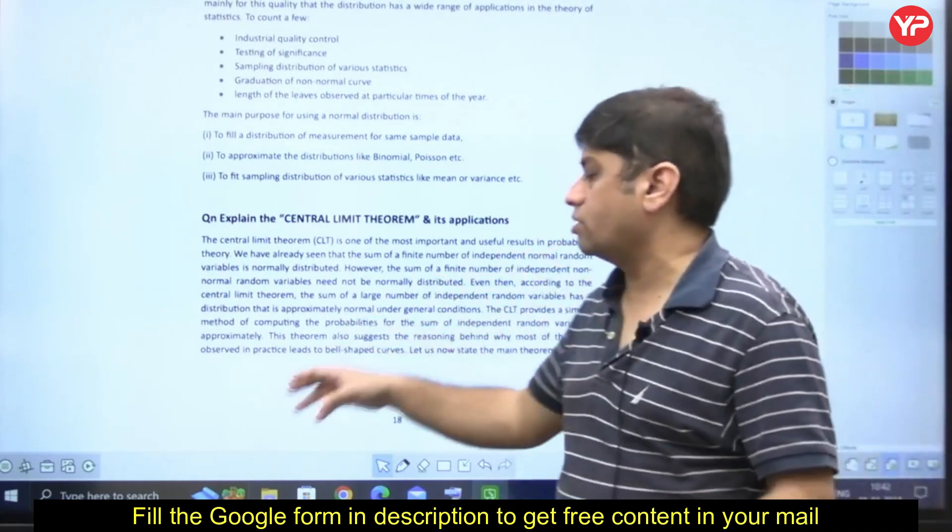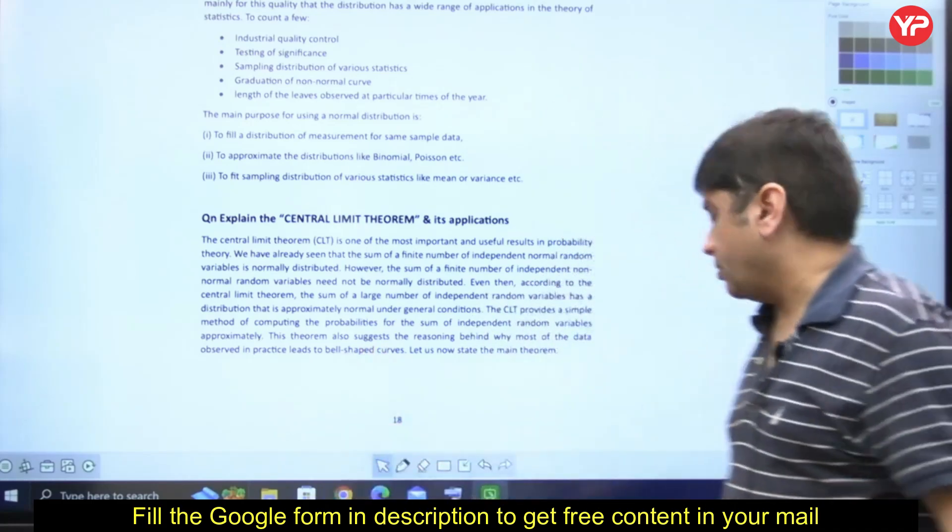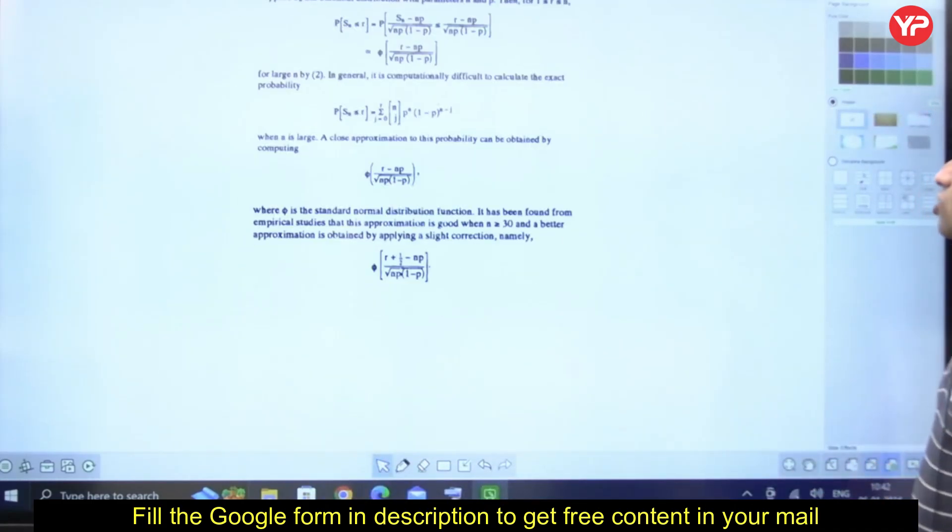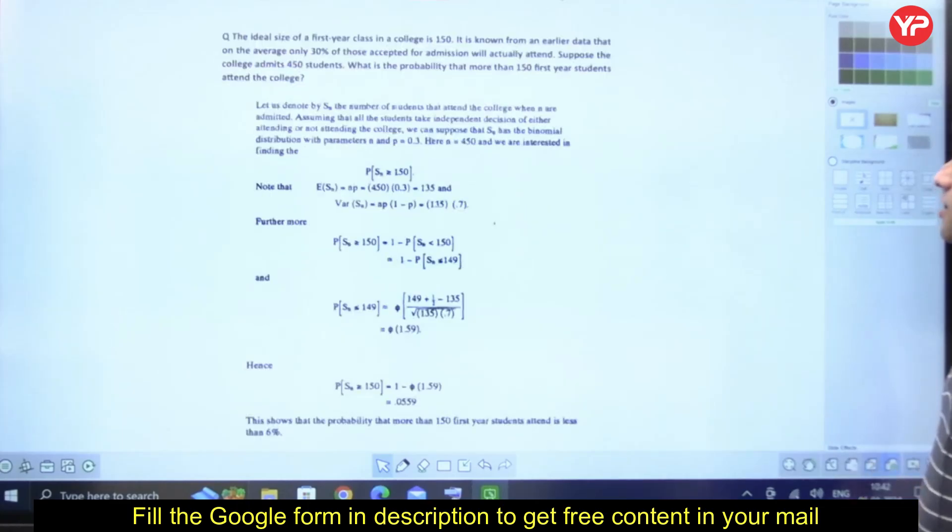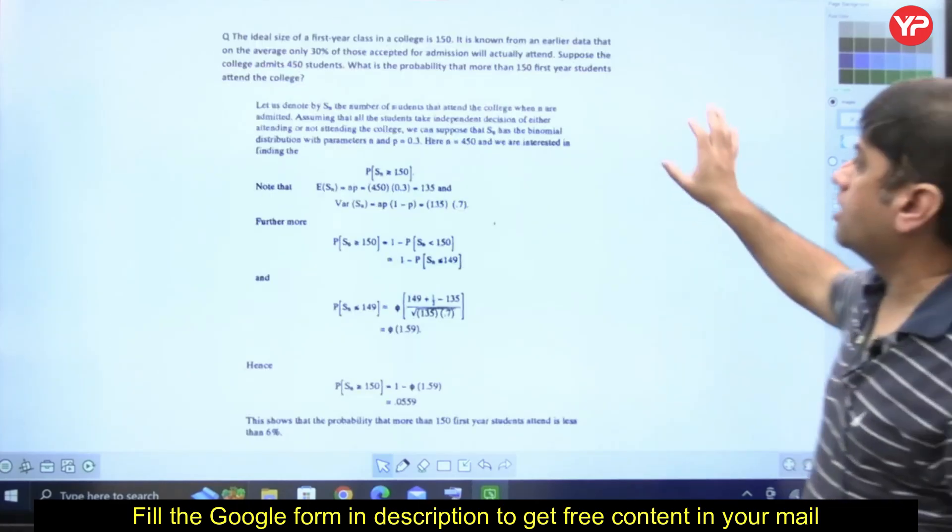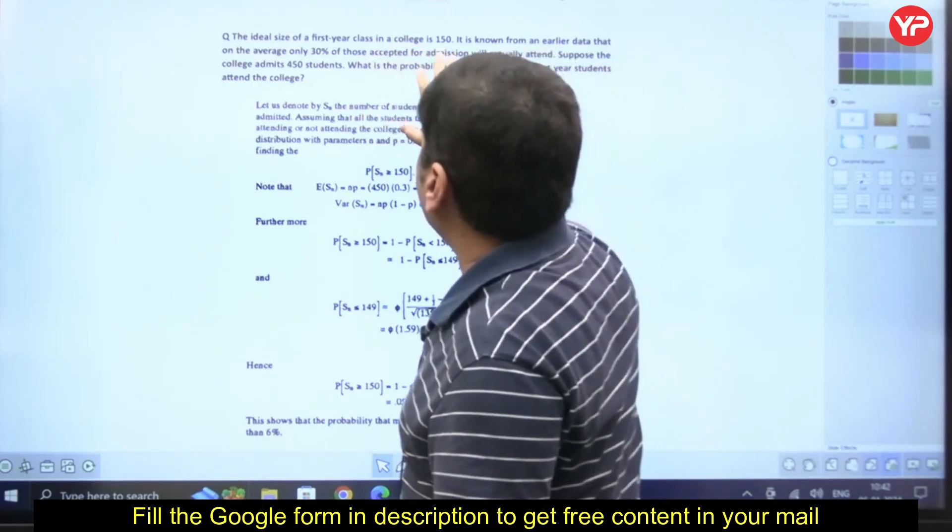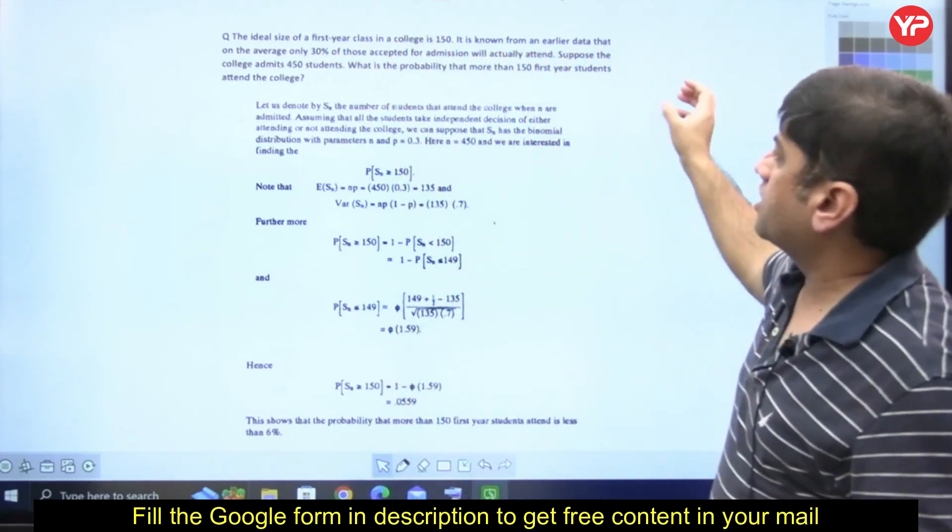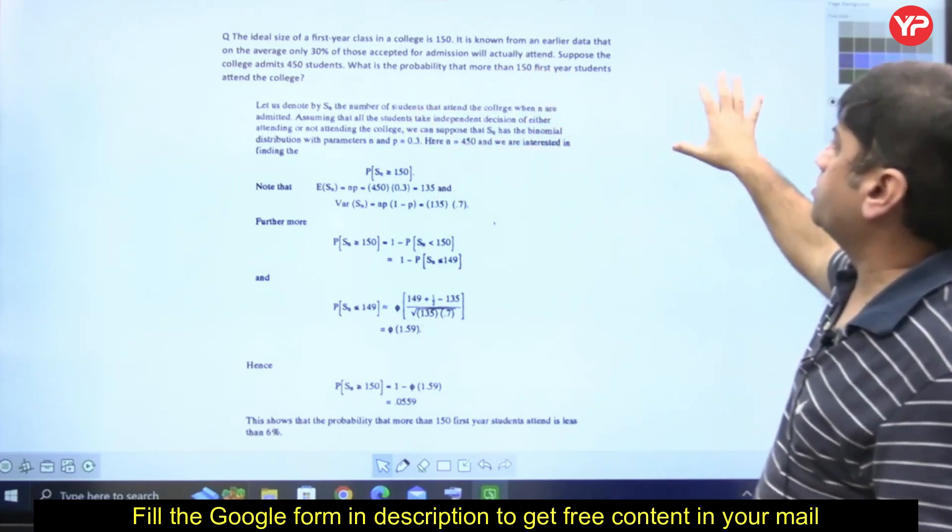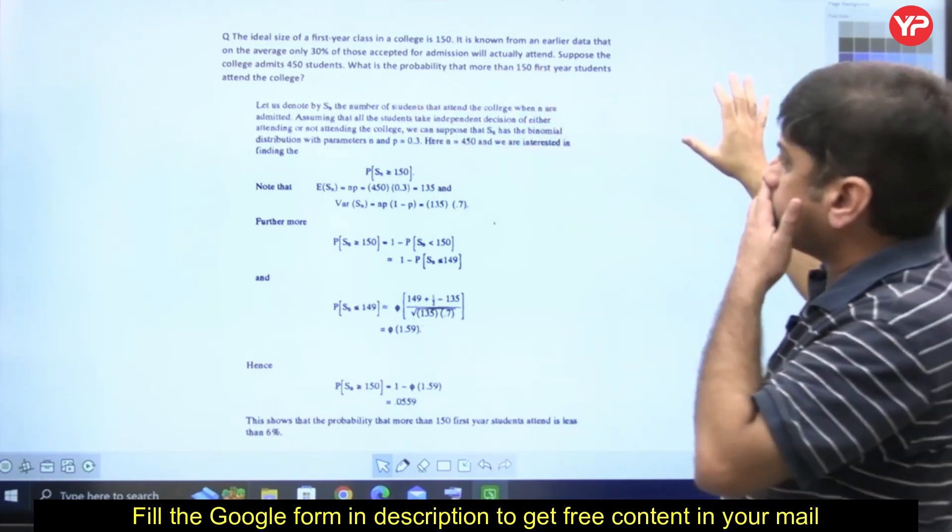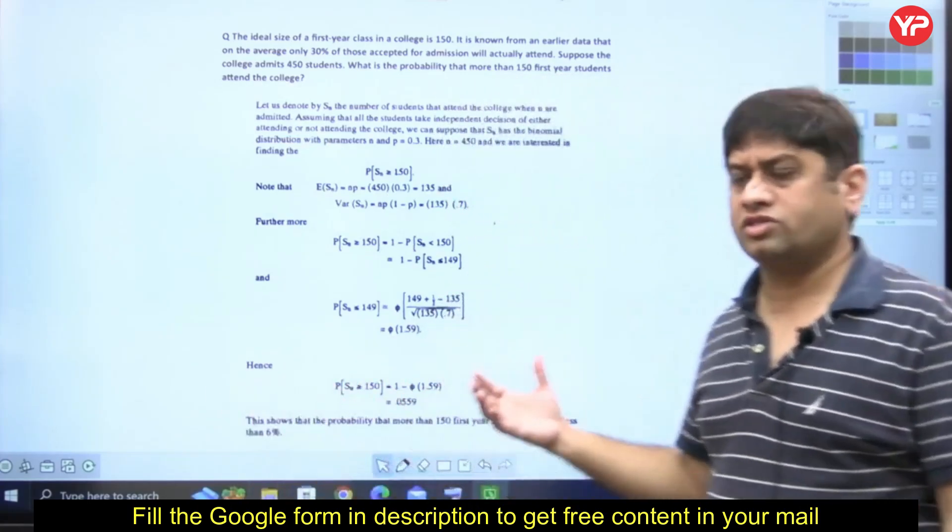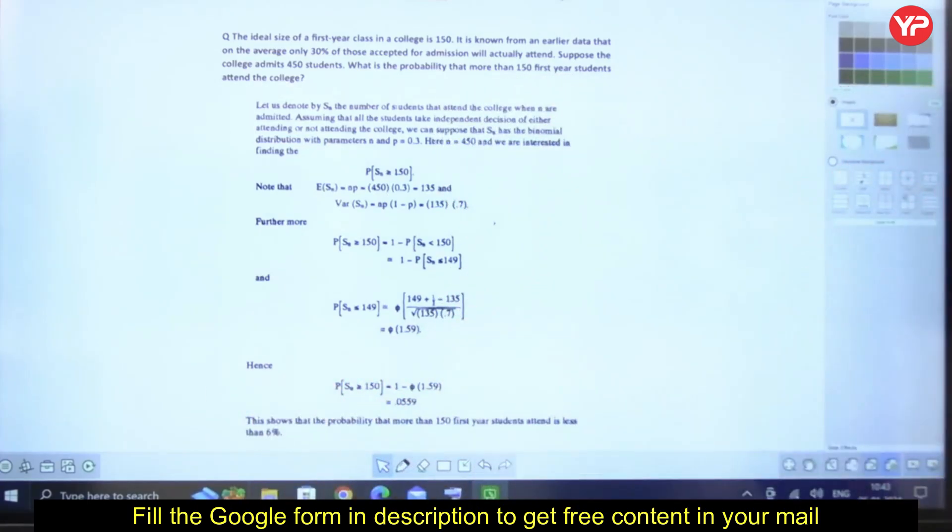What is the central limit theorem? Explain this and its applications. Maybe some numericals based on central limit theorem. Numericals can pop up like: the size of 50 colleges is 150, and from earlier data, the average is only 30% accepted for admission. What is the probability that this will happen? These are probability questions based on distributions.